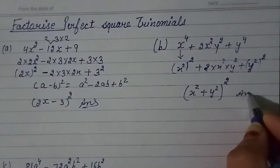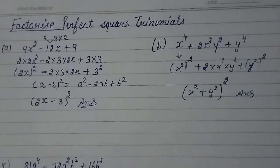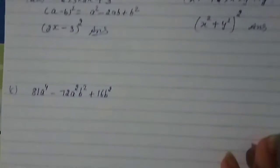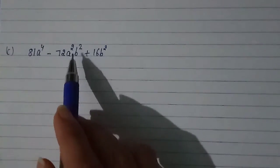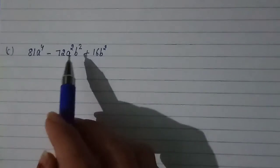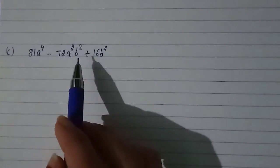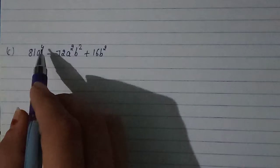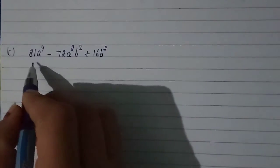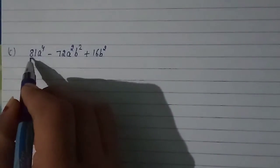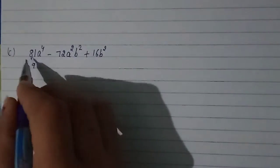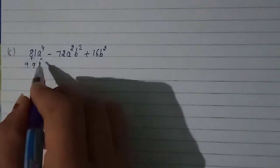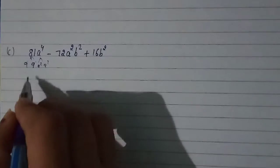Next question: 81a raised to the power 4 minus 72a squared b squared plus 16b to the power 4. It means a raised to the power 4 — if you factorize it, 9 times 9 is 81, and a squared into a squared gives 9a squared, raised to the power 2.